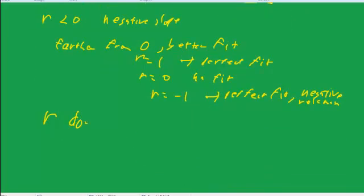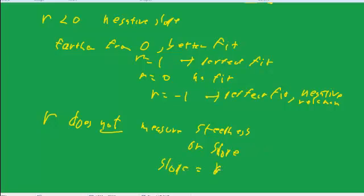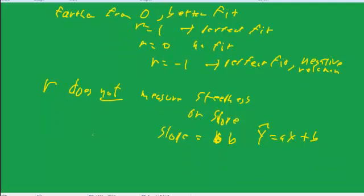r does not measure steepness. So it doesn't measure the slope of the line, so it doesn't measure the steepness of the slope. That comes from b, as we have in our equation, y hat equals ax plus b. The slope is b, not r, but r does measure the closeness of the fit.